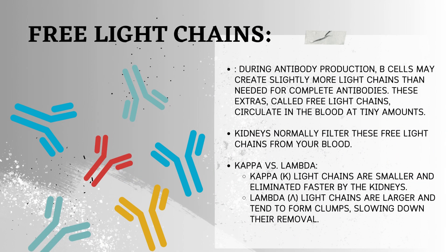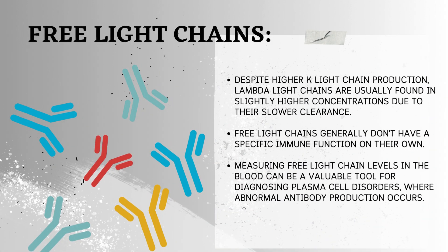Free light chains — leftovers from antibody production. During antibody production, B cells may create slightly more light chains than needed for complete antibodies. These extras, called free light chains, circulate in the blood at tiny amounts and are normally filtered by the kidneys. Kappa (K) light chains are smaller and eliminated faster by the kidneys, while lambda light chains are larger and tend to form clumps, slowing their removal. Despite higher kappa light chain production, lambda light chains are usually found in slightly higher concentrations due to their slower clearance — except in cases of kidney problems. Free light chains generally don't have a specific immune function on their own, but measuring them can be a valuable tool for diagnosing plasma cell disorders where abnormal antibody production occurs.